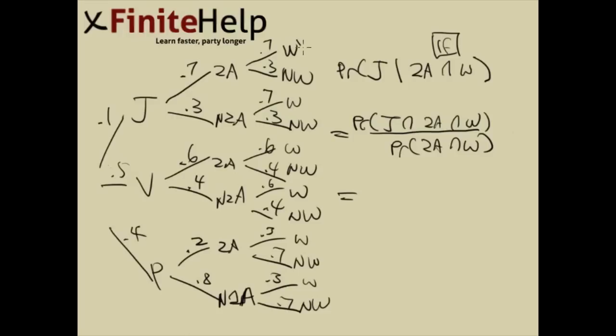That's going to be this one. Two airbag and white. Here, two airbag and white. And also here, two airbag and white. So here what I'm saying is that the probability of two airbag and white is the same thing as adding up all the cars that has two airbag and white which include the Jaguars that are two airbag and white, the Volvos that are two airbag and white, and the Porsches that are two airbag and white. So now we just multiply across 0.1 times 0.7 times 0.7 plus 0.5 times 0.6 times 0.6 plus 0.4 times 0.2 times 0.3. So this whole chunk is going to be the bottom.